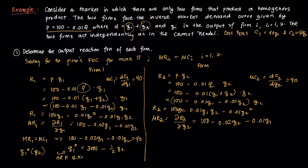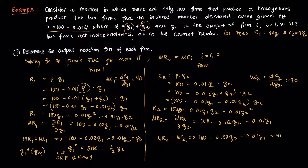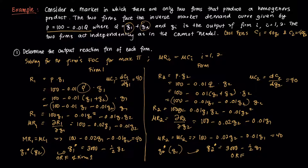This is the output reaction function of firm 1. Setting MR2 = MC2: 100 − 0.02Q2 − 0.01Q1 = 40, and isolating Q2 gives Q2* = 3000 − ½Q1. Q2* is a function of Q1, and this is the output reaction function of firm 2.